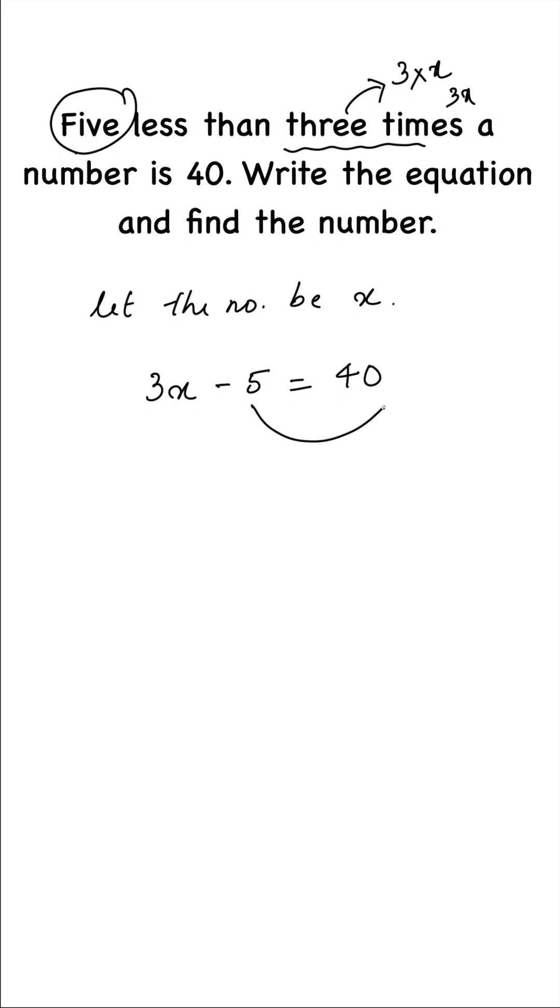Therefore, we transpose minus five to the right side. We get 3x equals to 40. The sign will change, it will be plus five. So 3x equals to 45. We have to find the x value.